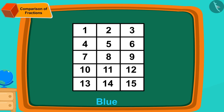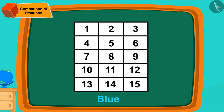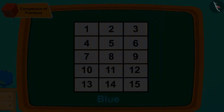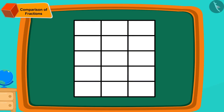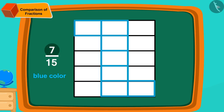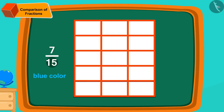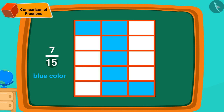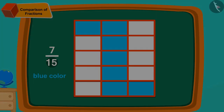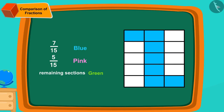Let us first fill the blue color of Chanda's design. Chanda needs blue color in seven fifteenths of the sections — in other words, seven out of 15 sections have blue color. We can fill it in this way.